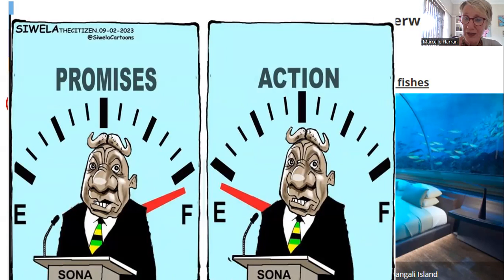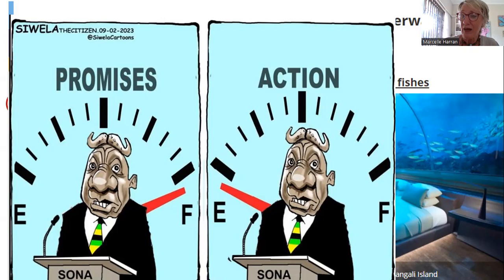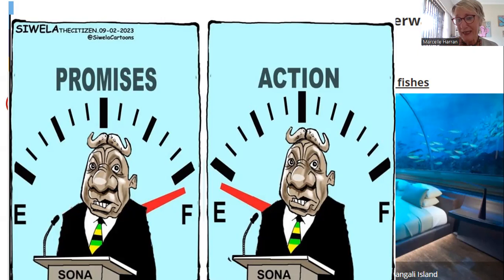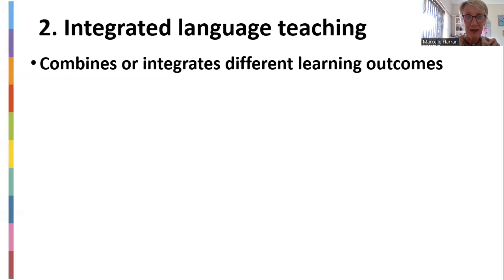Here's the State of the Nation address cartoon — the Sona with Cyril Ramaphosa, our president, and all the promises shown like a fuel gauge. You can see MT (empty), E, and F (full). The promises are full, right to the top. But then in the second frame, the dial is on E. There's so much you can discuss: why the same picture of Cyril in both frames? What has changed? What is the same? What is different? Why? What is funny about it? Those things give students experience analyzing and being critical about visual literacy.